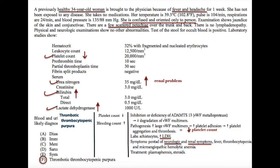Patients with thrombotic thrombocytopenic purpura are usually very sick. There is deficiency of ADAMTS13, which results in decreased degradation of von Willebrand factor multimers. This causes increased platelet aggregation and increased prothrombotic effects. There is a widespread shearing of red blood cells, which gives these cells the appearance of schistocytes and increased hemolysis markers,